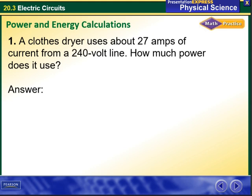Another example, power and energy calculations: a clothes dryer uses about 27 amps of current from a 240 volt line. How much power does it use? So what are we going to say? We are going to know what is given to us.